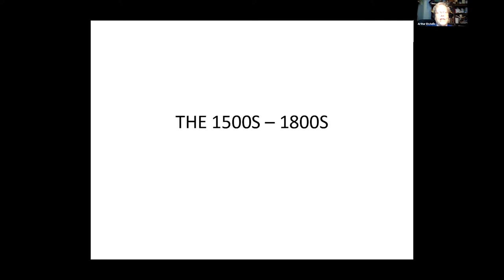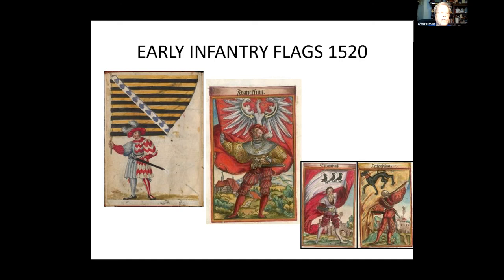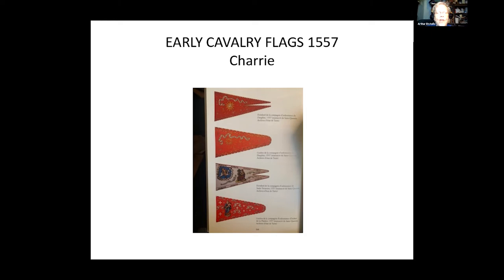From the 1500s to the 1800s, infantry flags featured large geometric patterns with horizontal stripes very popular, reflecting livery colors. They were made of pieces of cloth, sometimes dyed, with details painted on rather than embroidered, and they had no fringes. Here are some contemporary pictures from the 1500s — a typical striped flag representing a city, with short poles so the flags could be waved. These are city flags from the mid-German period.